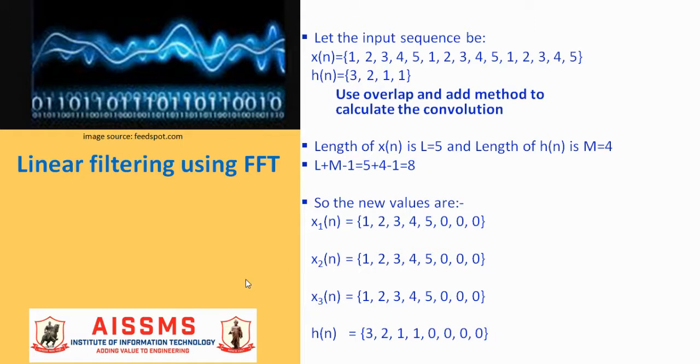Each of the subsequences x1(n), x2(n), and x3(n) needs to be made equal to length 8. For which, as per the algorithm, we need to pad M minus 1 extra zeros at the end of each subsequence. So x1(n) becomes 1, 2, 3, 4, 5, 0, 0, 0, and similarly x2(n) and x3(n).